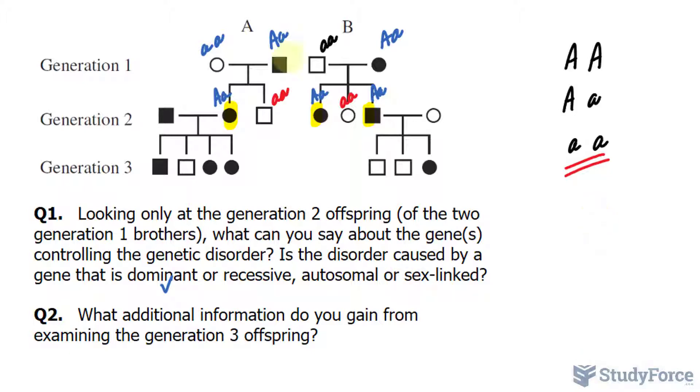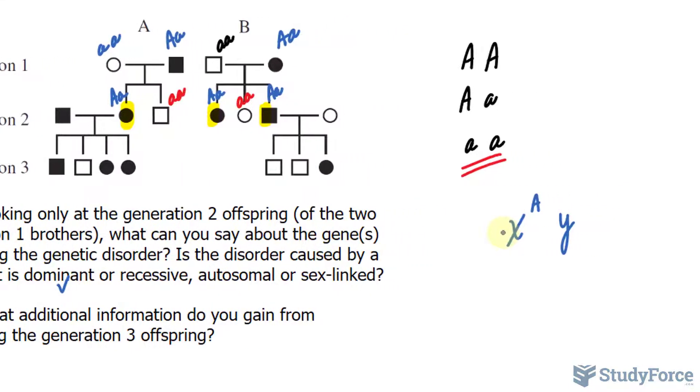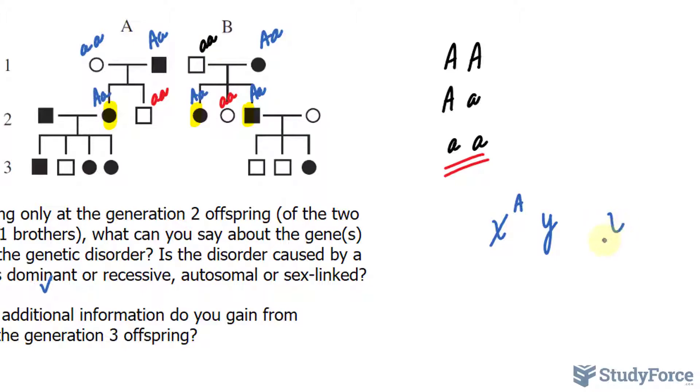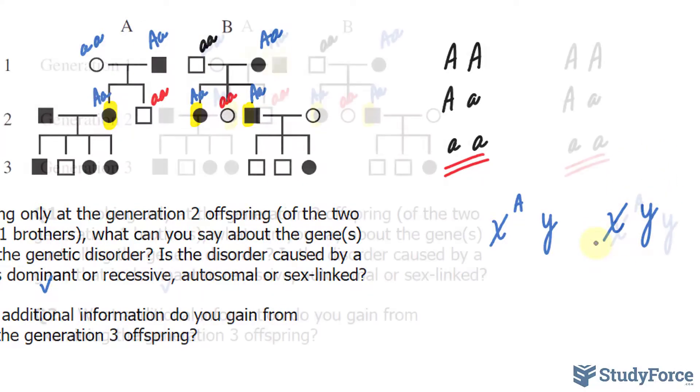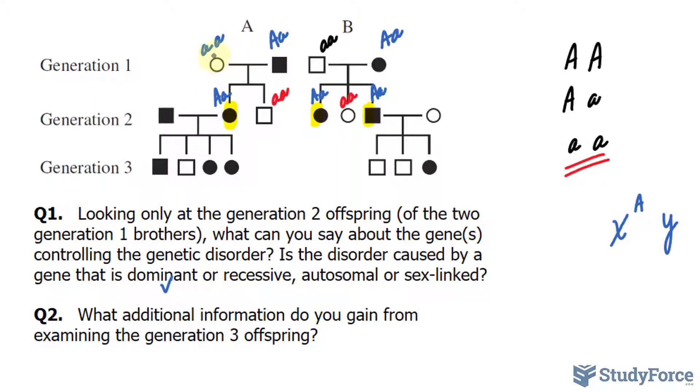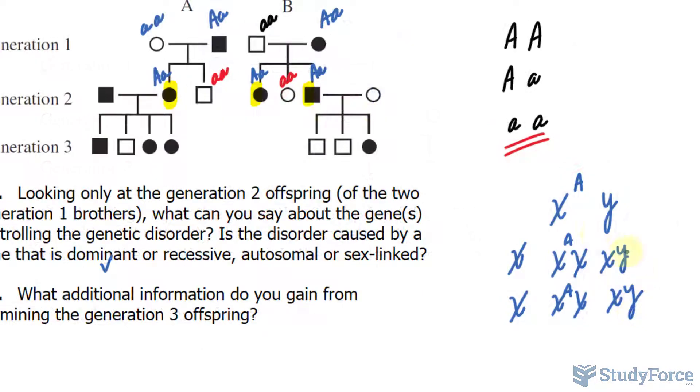Let's assume that this brother who has the disorder has genotype XY. Given that he has the disorder and we've assumed it is dominant, we would put the capital A on the X. This brother wouldn't have it, so his genotype would be XY. Focusing on lineage A, his wife would have genotype XX. If she's completely healthy and we do this cross, we get the following offspring.